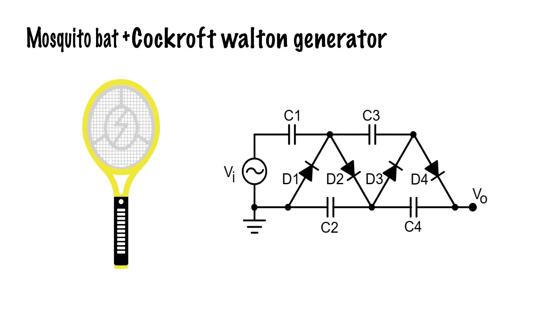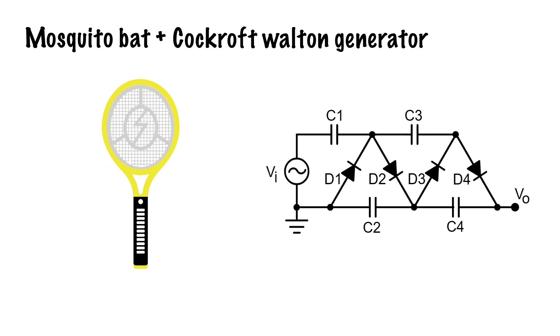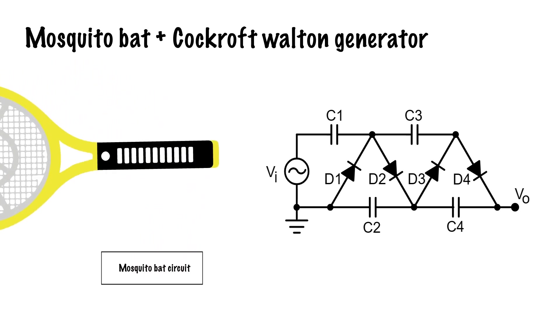It then occurred to us to merge the Cockcroft voltage generator with the mosquito bat circuit, albeit with some modifications. In the original bat circuit, AC supply is converted to DC and stored in a battery. When the button is pressed, this battery discharges DC current, which in turn runs through an oscillator to provide high-frequency AC. This is then amplified using a step-up transformer and rectified to DC using diodes to power the mesh.